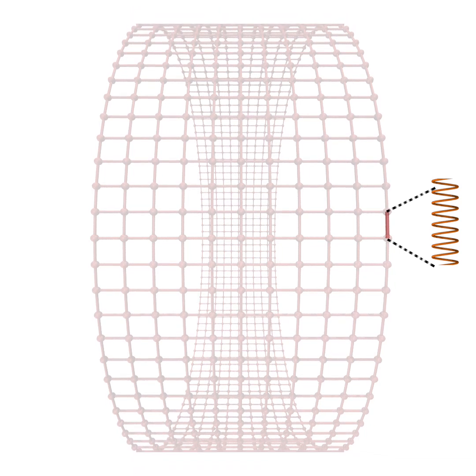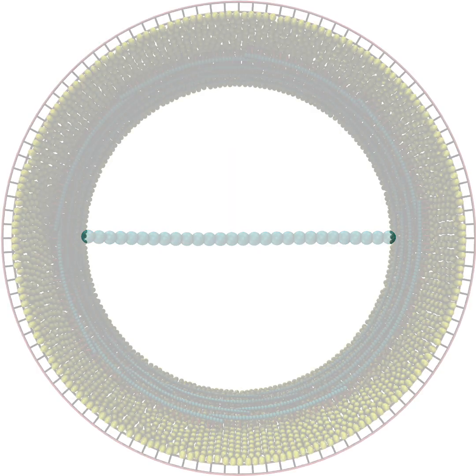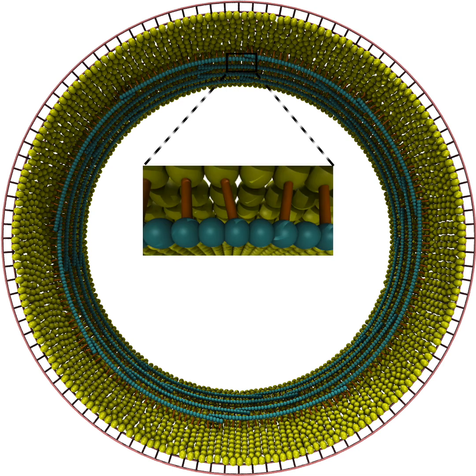Glycan springs are replaced with shoulder springs to prevent the membrane from expanding. We model FtsZ filaments as chains of beads, shown here in cyan, connected by springs. And the filaments are connected to the membrane via linkers, shown here as orange rods.